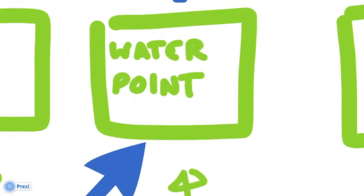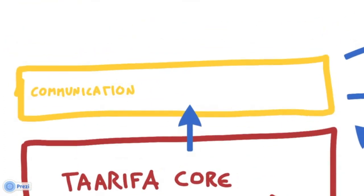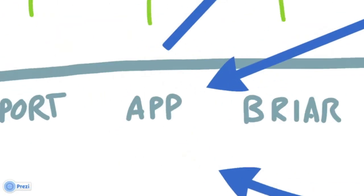When the agent has fixed the water point, they report this by SMS. The process is communicated to the local water manager who will verify that the repair has been completed.